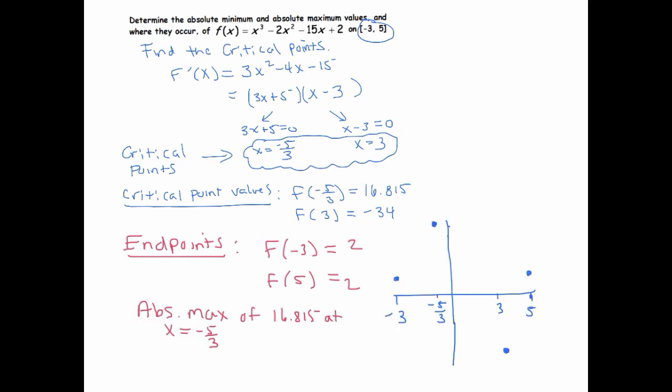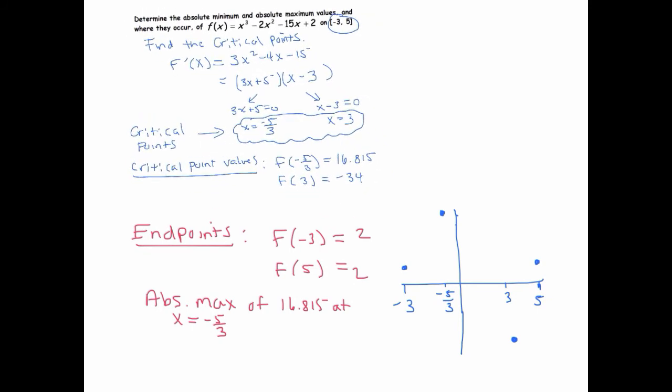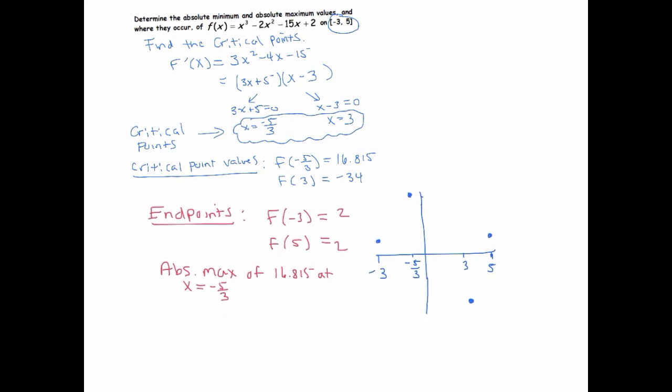And the absolute min, the absolute min must be occurring at 3. So we have an absolute min of negative 34 at x equals 3.